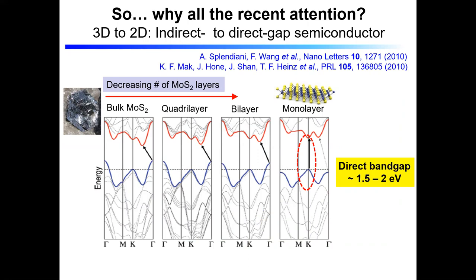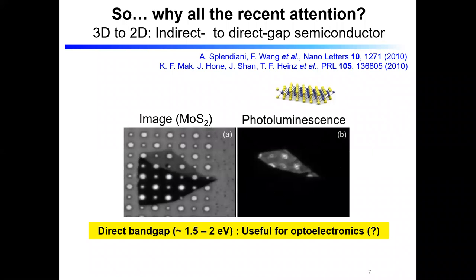So why all the recent attention? The reason is these two papers published in 2010 from Fang Wang's group at Berkeley and the Tony Heinz group at Columbia, which both pointed out that as we exfoliate this material — using the Scotch tape method — and get thinner and thinner layers, in the limit of a single monolayer it becomes a direct gap semiconductor at the K and K' points of the hexagonal Brillouin zone, with a nice big gap in the optical region. It's only that very thin monolayer part that gives you bright photoluminescence, which is evidence for a direct gap semiconductor.